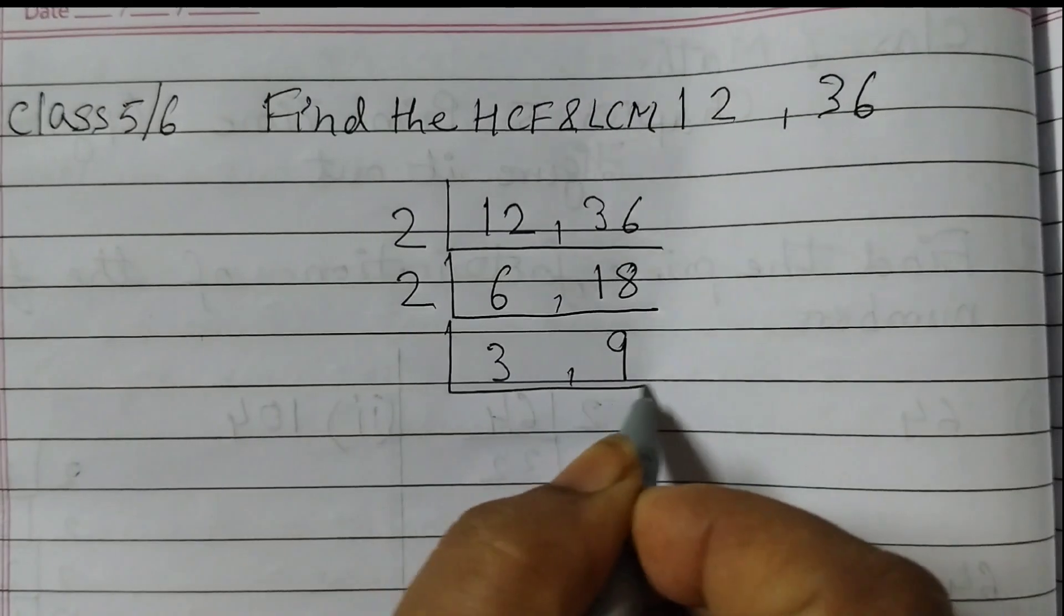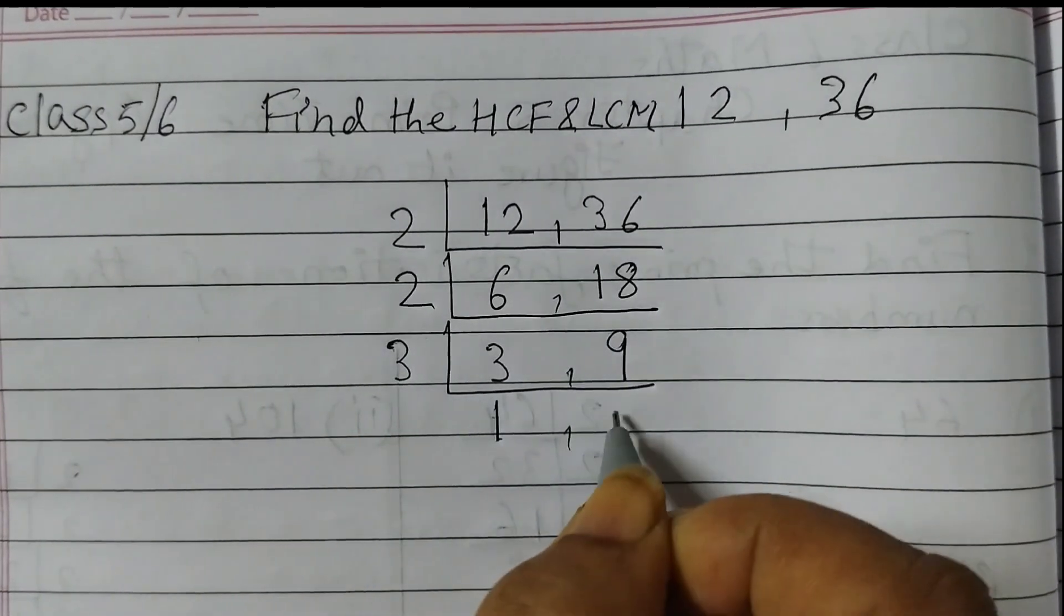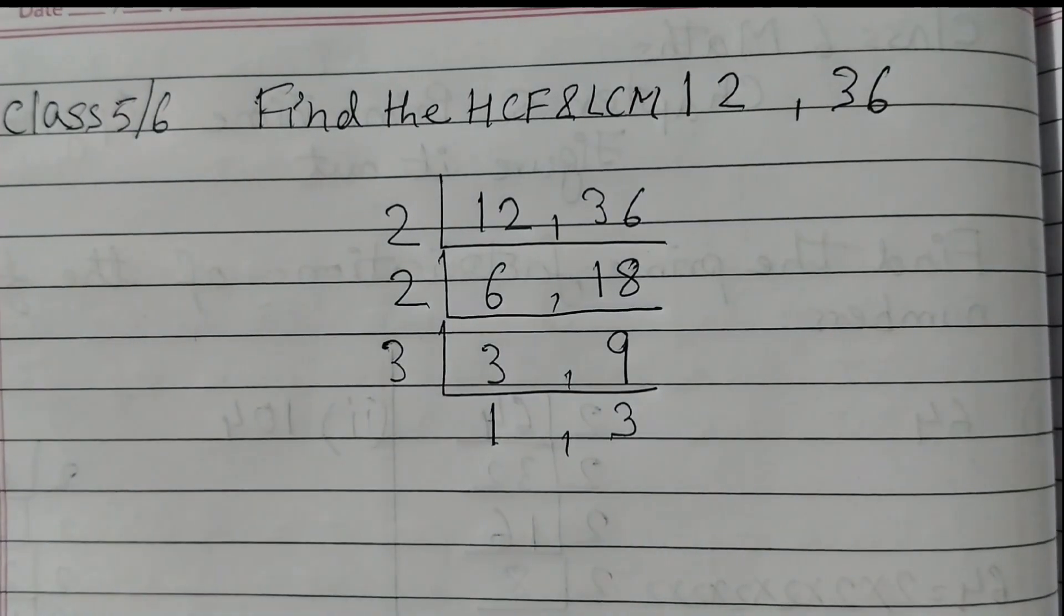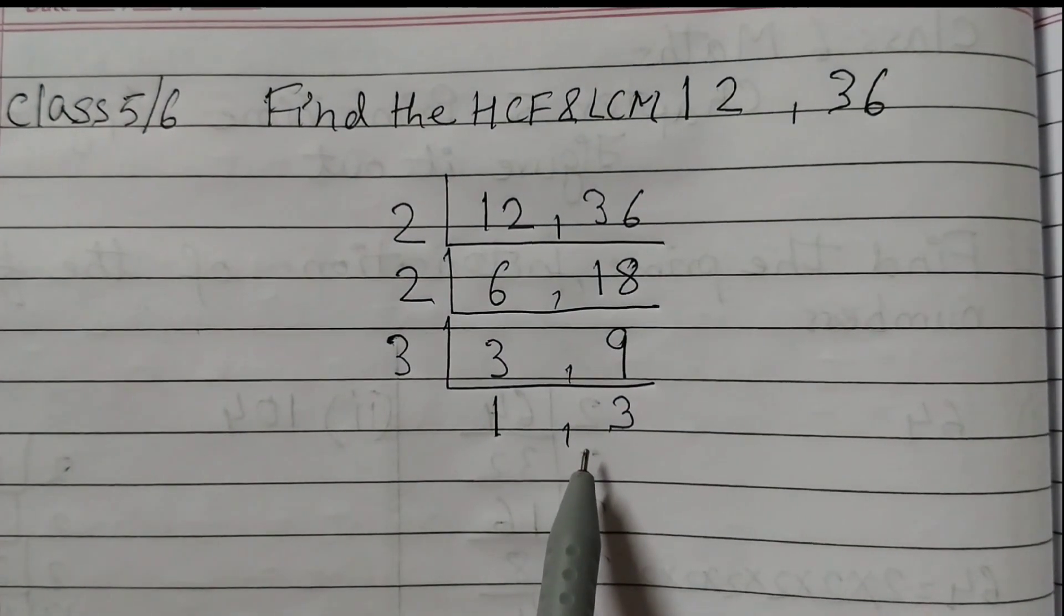Both these numbers are divisible by 3, so 3 times 1 is 3, and 3 times 3 is 9. So now here we have got 1 and 3, and both these numbers are divisible only by 1, so we need to stop.